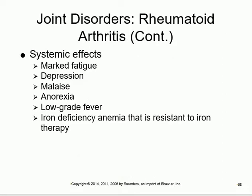Rheumatoid arthritis also has systemic effects - fatigue, depression, fever, and malaise. This is different from osteoarthritis, which has no systemic involvement. Osteoarthritis is purely degeneration of the cartilage of the big joints, with no systemic signs.